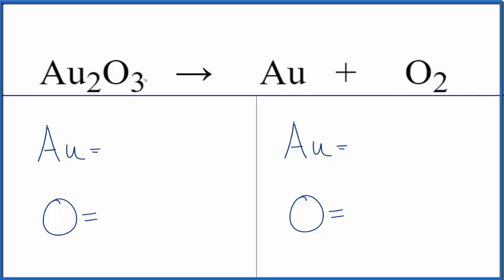This is gold 3 oxide, and then we have gold, solid gold, and oxygen. So we have a solid, solid, and then a gas.